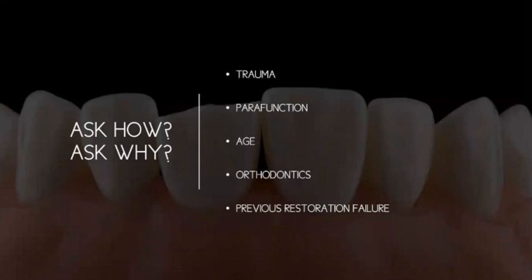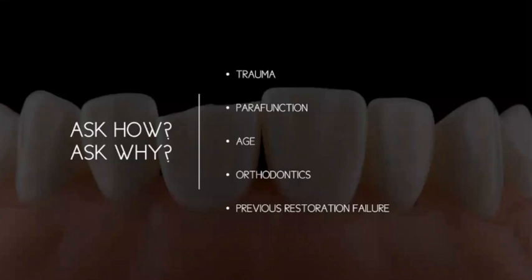More often than not it's post-orthodontics where you see these patients — they've got differential wear, or teeth were misaligned and wore, and now they're straight in the arch yet things don't look quite straight. That's a lovely situation because then you can make everything look straight. Also consider previous restoration failure: if a restoration keeps failing, it's unlikely it's just poor etching and bonding — there's probably something else causing the repeated failures.